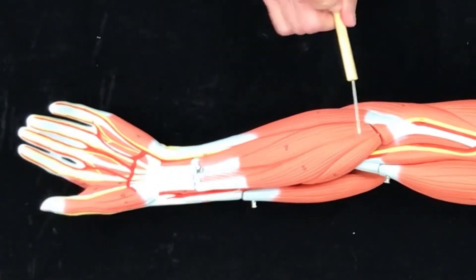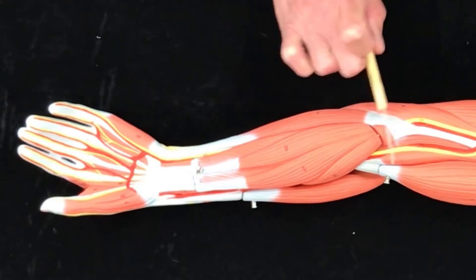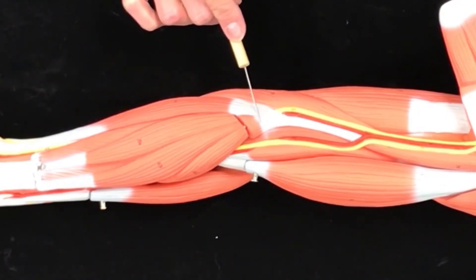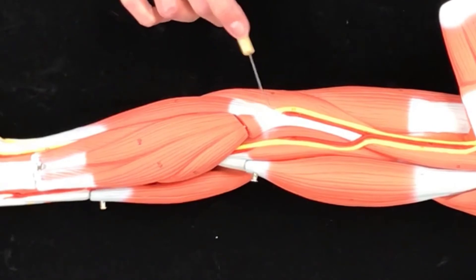And then back to this antecubital area, this is also where we would find the median cubital vein. The median cubital vein is the most commonly used vein when drawing blood, starting IVs.